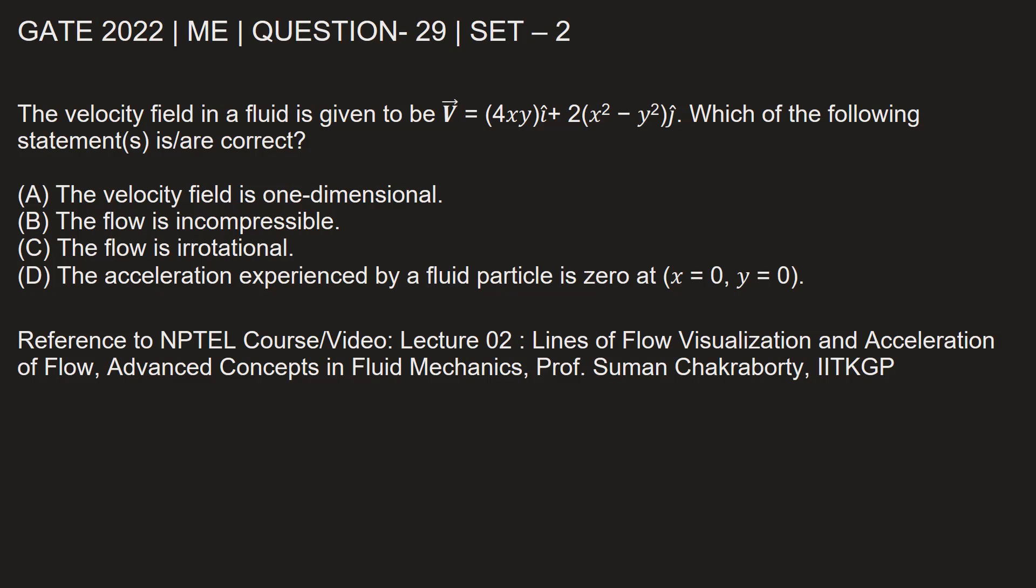Option A, that the velocity field is one-dimensional, is clearly incorrect because V depends on both x and y and also has unit vectors i and j. This indicates it's a two-dimensional velocity field, and therefore A is wrong. Now let's check for B, C, and D.